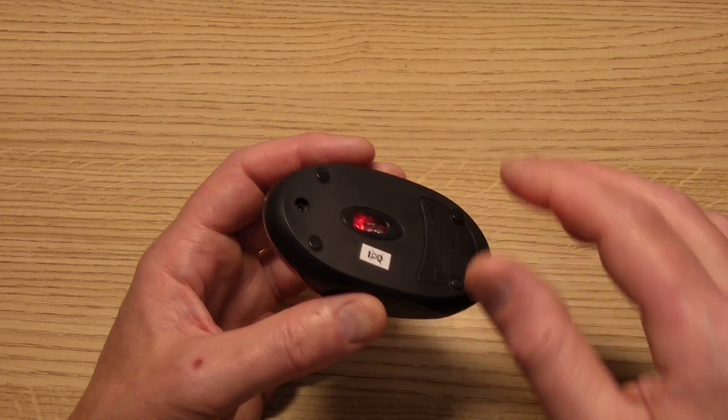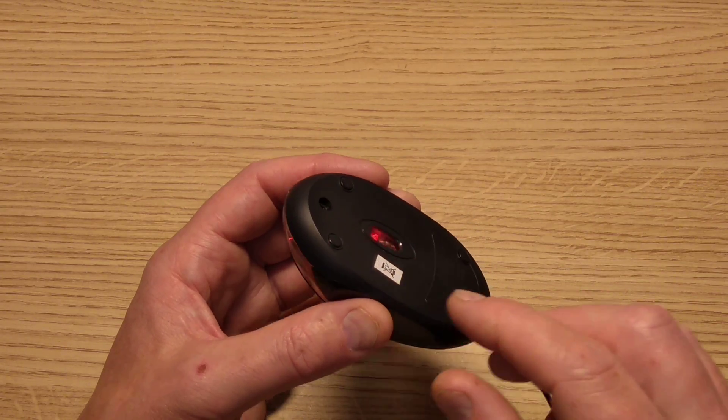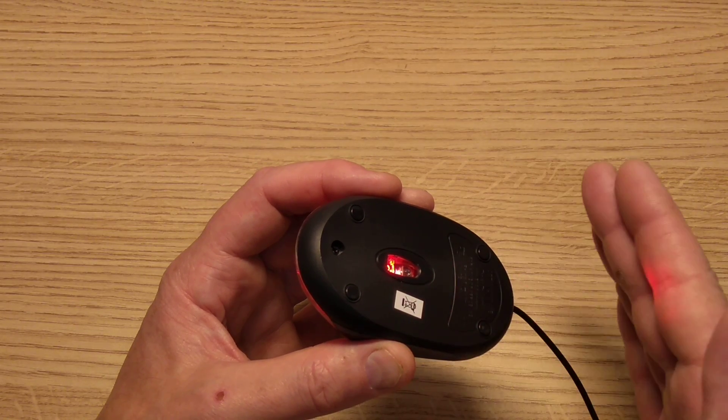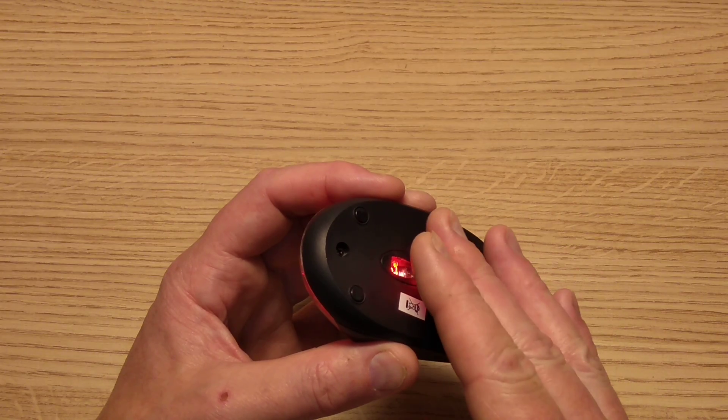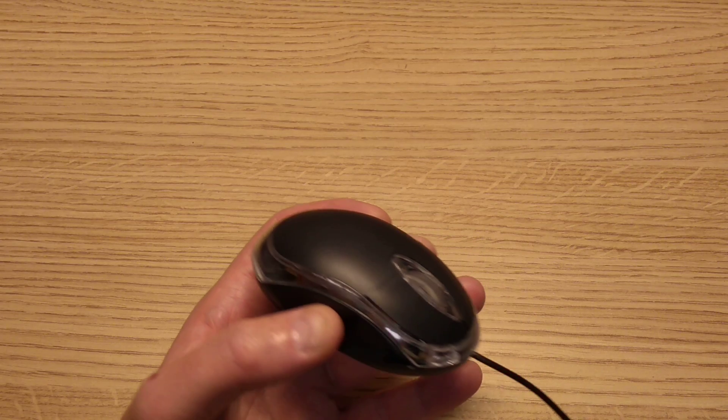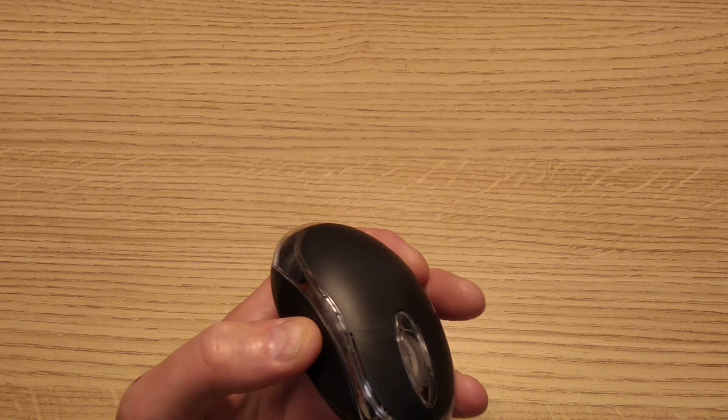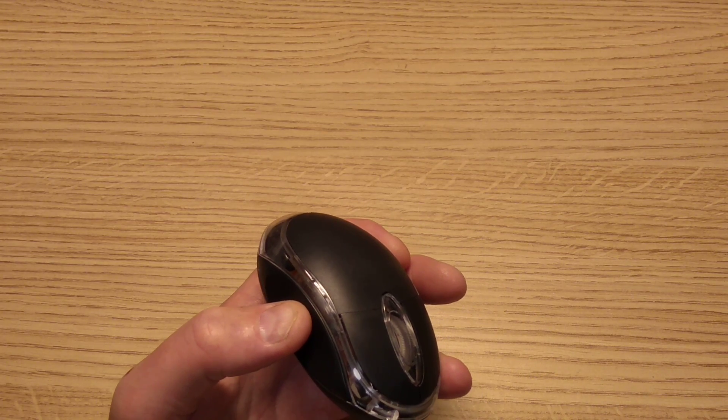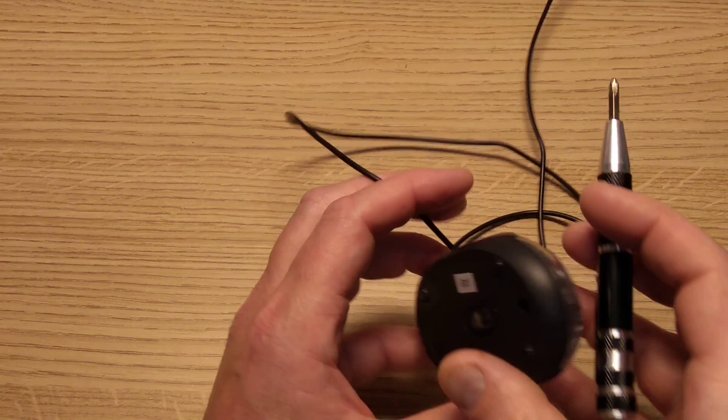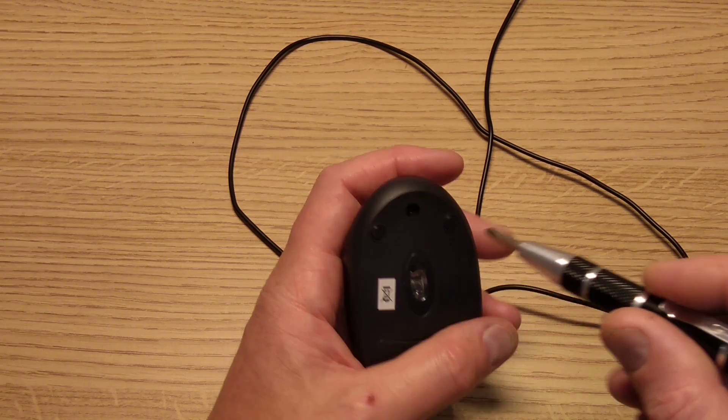Before I open this, let's note that the red LED changes intensity whenever there's movement detected - it increases in brightness. There's a reason for that. I'll just unplug this now and pull its cable over here and get the screwdriver out to whip out the one screw that's inside it.